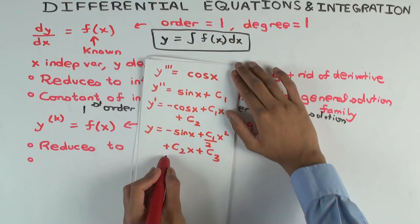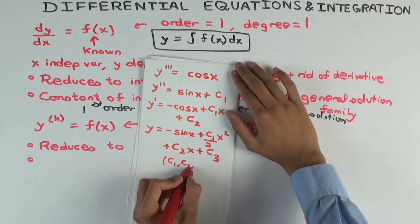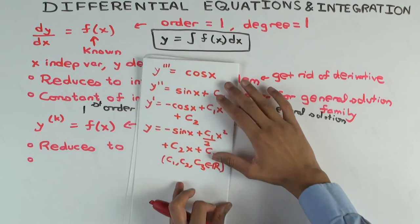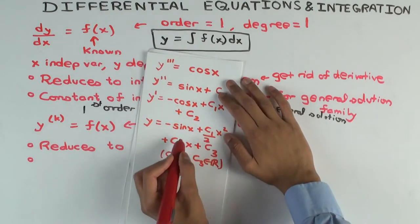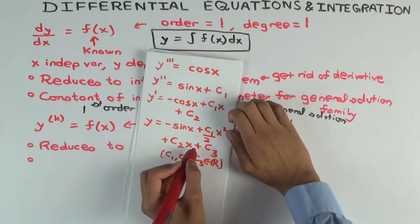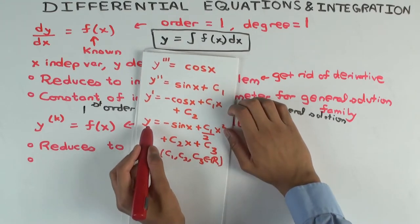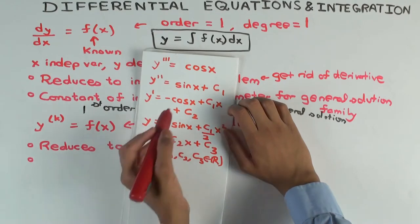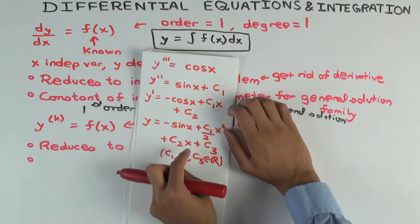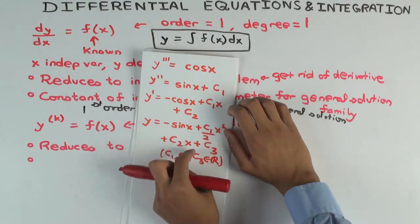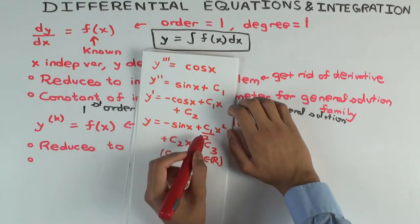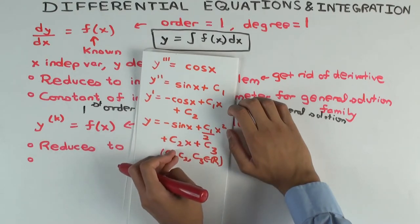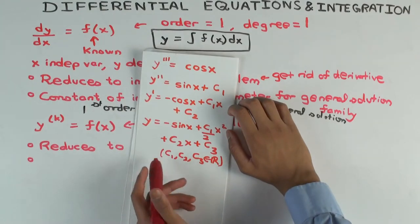This means that for every real value of C₁, C₂, and C₃, you get a solution to this differential equation — a third antiderivative of cos(x). For example, putting C₁ = 5, C₂ = 6, C₃ = 20 gives −sin(x) + 5x²/2 + 6x + 20, which has the property that its third derivative is cos(x).